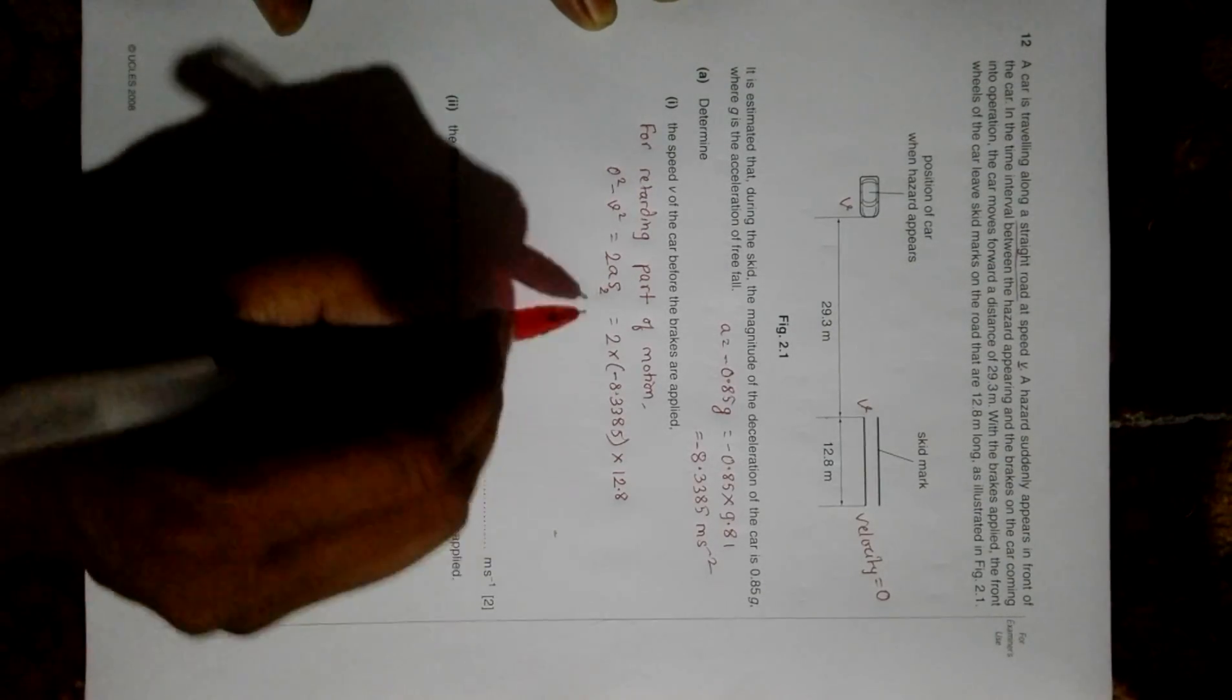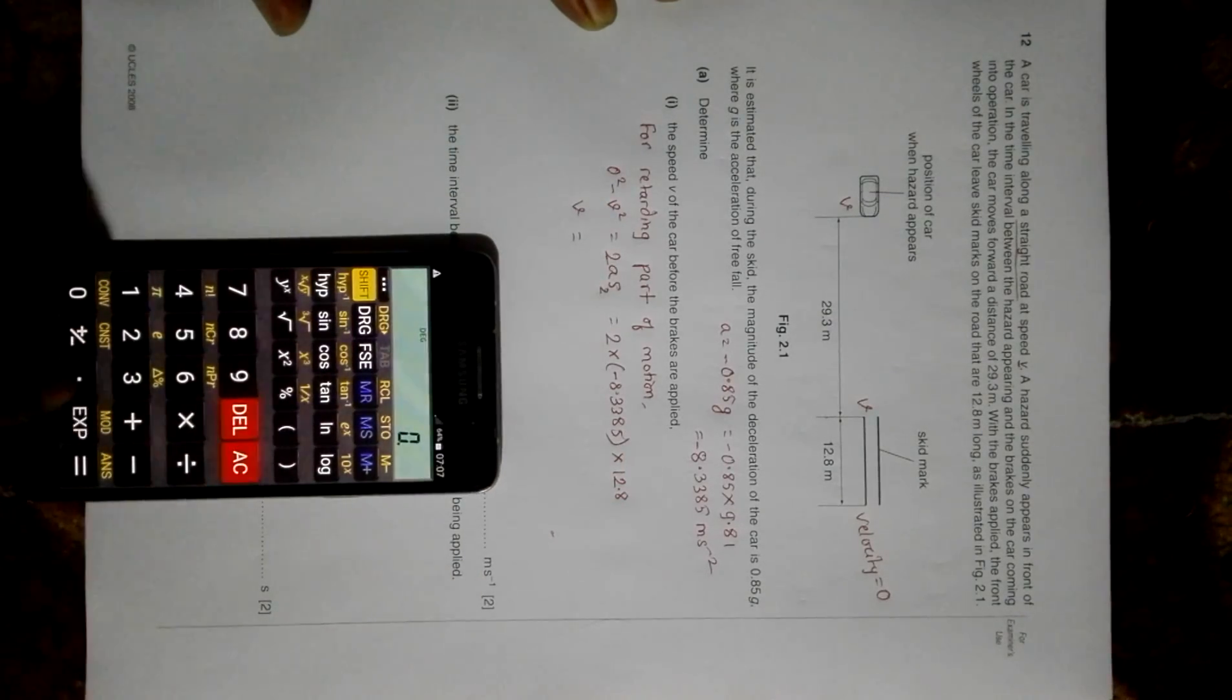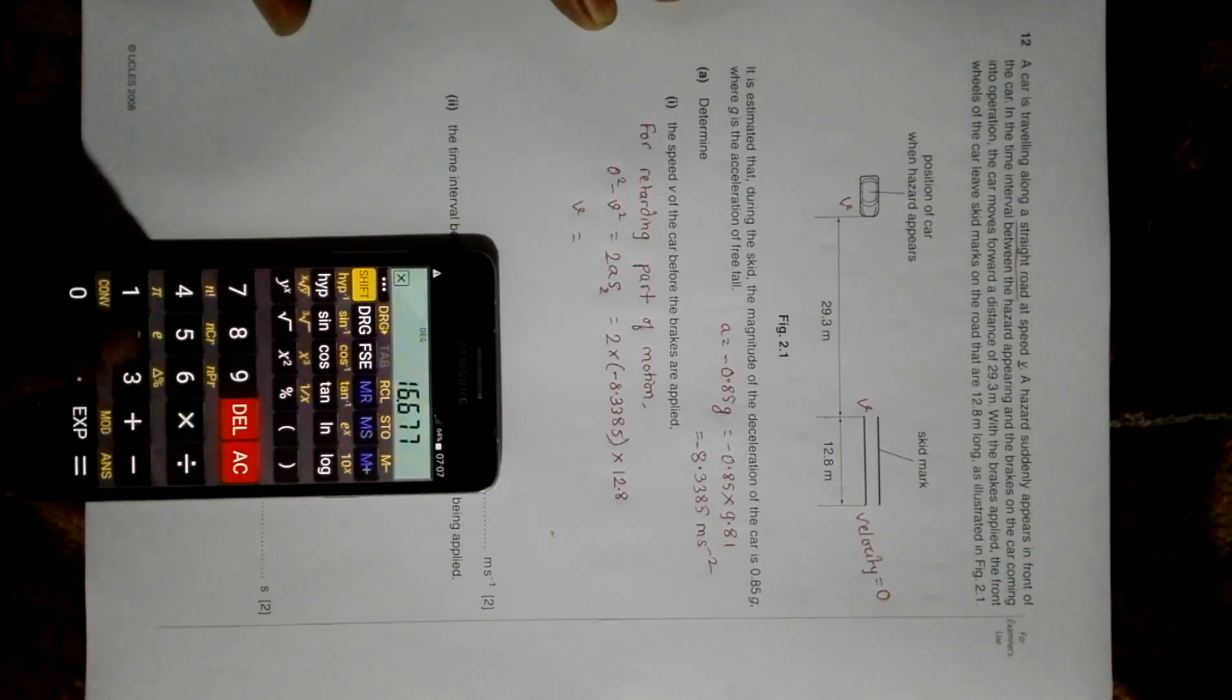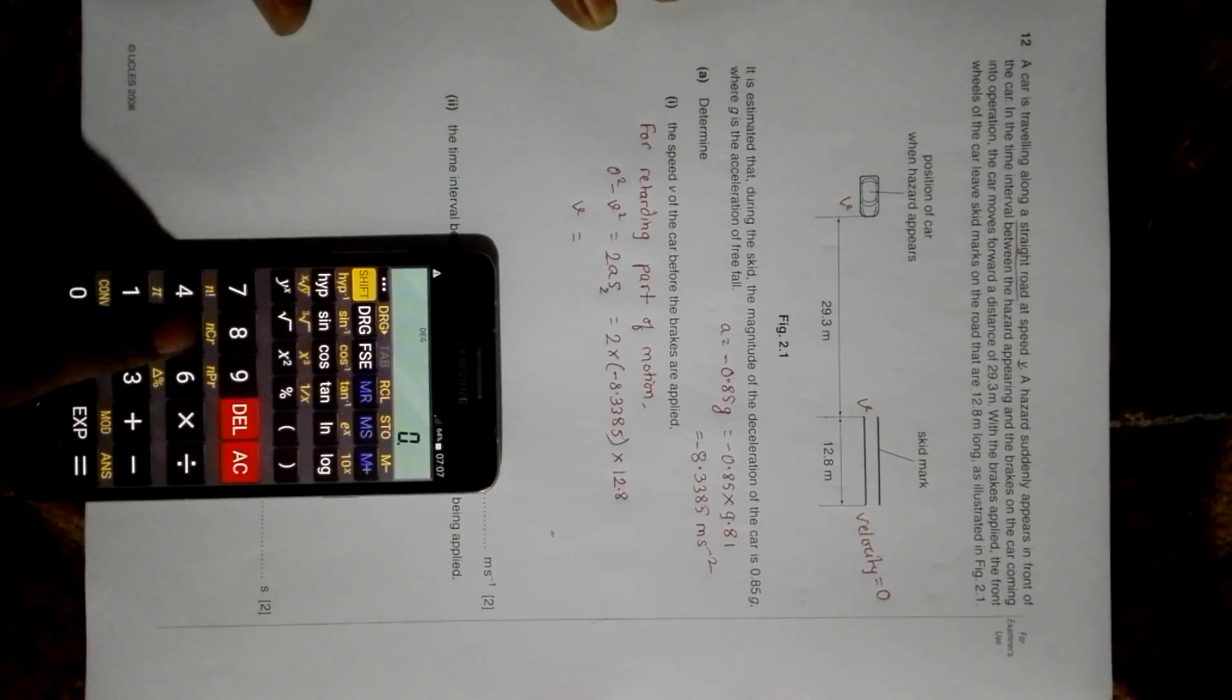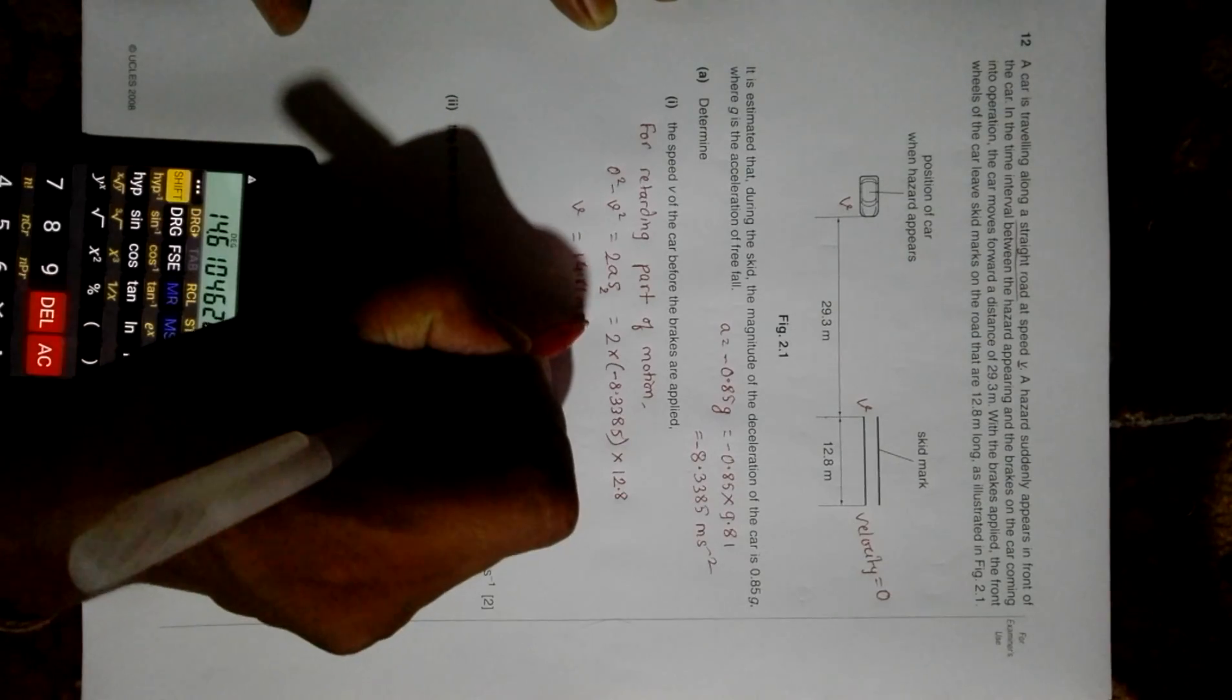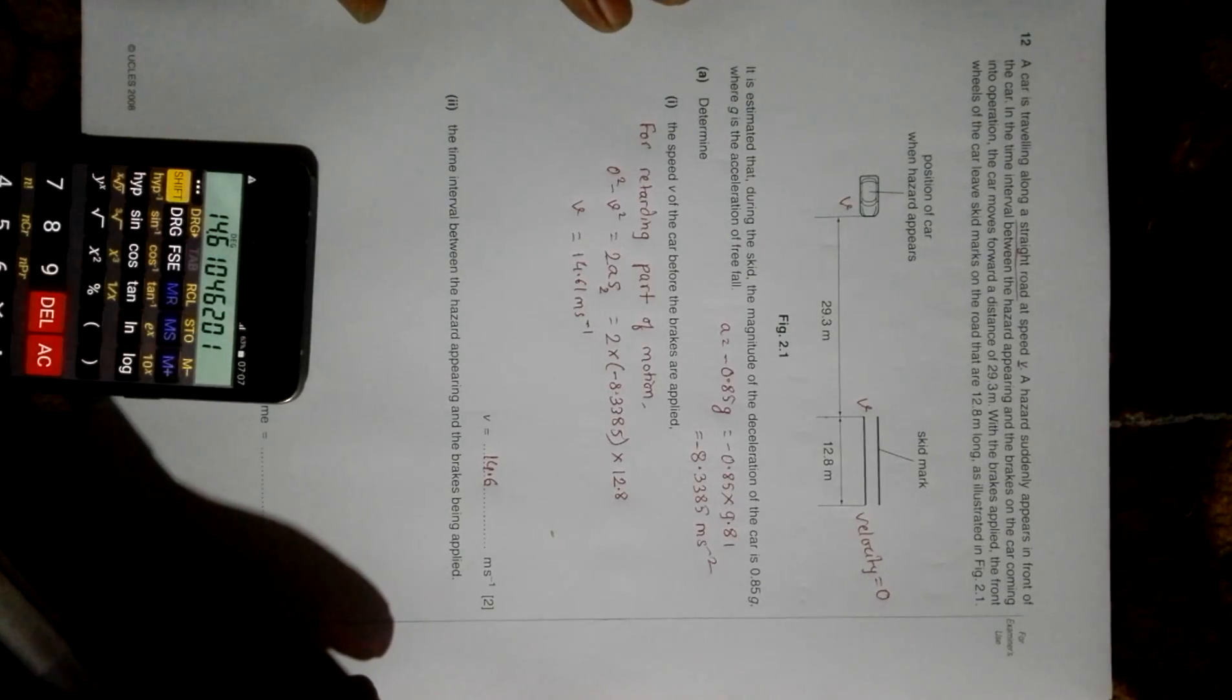It is final velocity squared minus initial velocity squared equals 2as. This and this cancel, so our V will be simply equal to the square root of 2 into 8.3385 into 12.8. Taking the square root gives a value of 14.61 meters per second, which I can write as 14.6 meters per second in three significant figures. So V equals 14.6 meters per second.